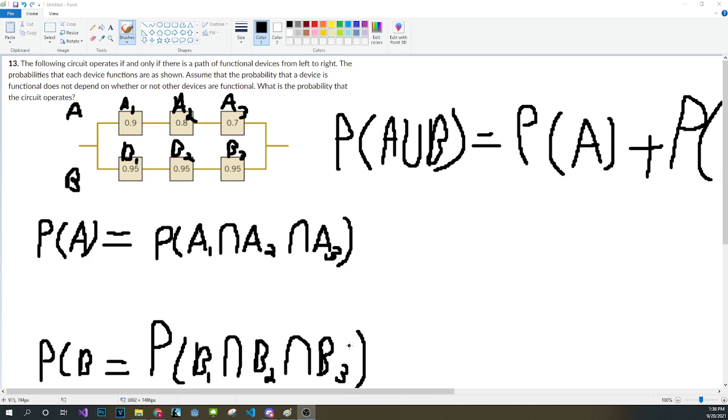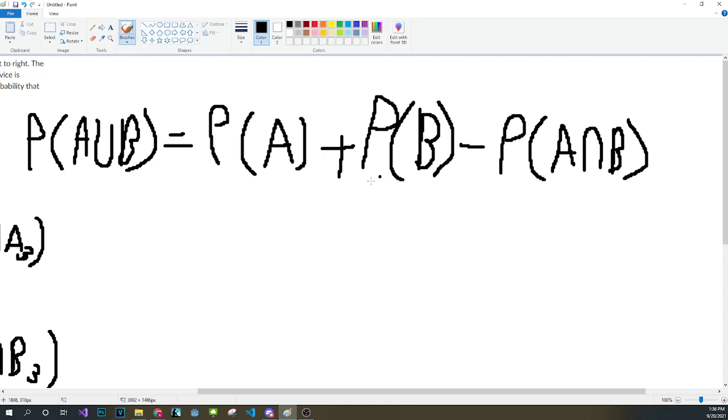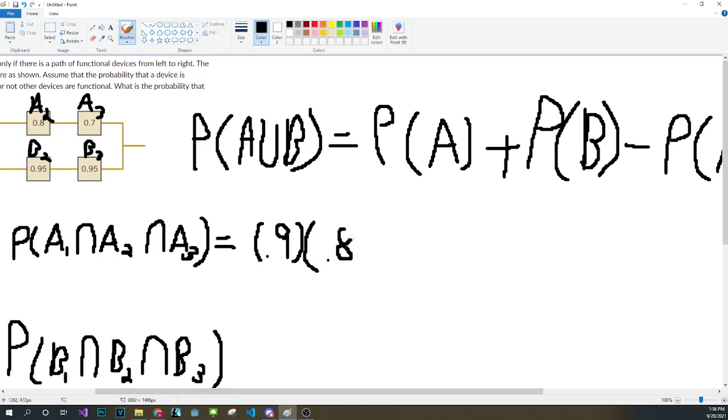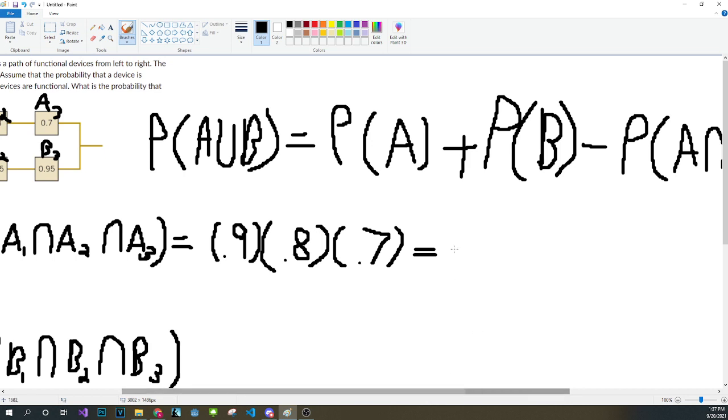So right now our goal is to get the probability of A and the probability of B. Once we get those two, the problem just becomes that much easier. So since this is the intersection of all three of them, the probability of all three of these working is just the probability of A1 times the probability of A2 times the probability of A3. So let's do that. In this case we get 0.9 times 0.8 times 0.7, and when we calculate that we get 0.504.